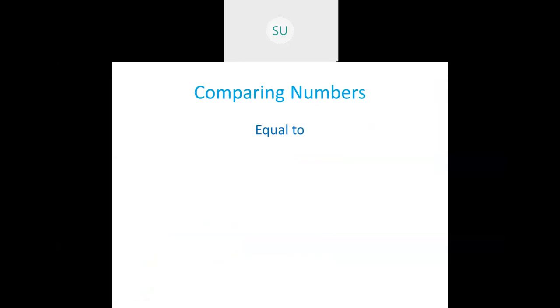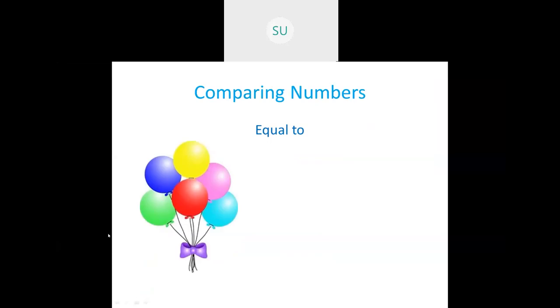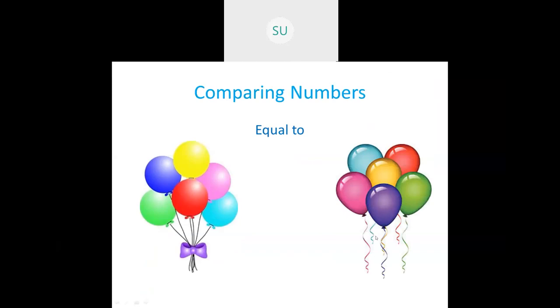0 comes before 1. Then we saw how to compare numbers. First we saw the meaning of equal to. Here we have a set of balloons — 1, 2, 3, 4, 5 and 6 balloons, and another set also has 6 balloons. Both sets have 6 balloons, so they are equal. Another example: 10 fishes and 10 ships — both are equal. So this is the equal to sign.